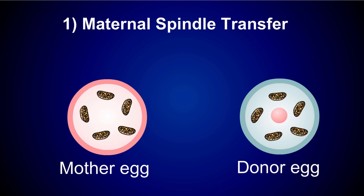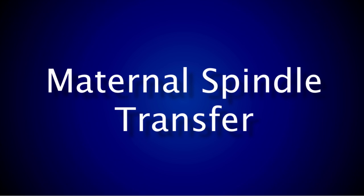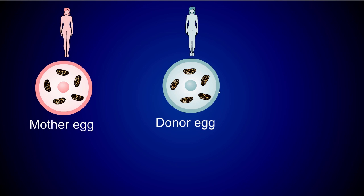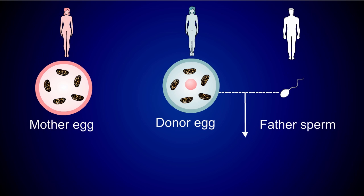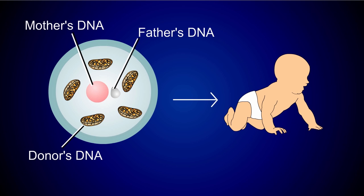One is called a maternal spindle transfer; the other is called a pronuclear transfer. In the maternal spindle transfer procedure, the genetic information from a mitochondrial defect-free donor egg is removed. Then the genetic information from a mother with mitochondrial gene defects is inserted. In this way, a woman with harmful genes in her mitochondrial cells is able to place her genetic information into an egg that is free of the defective genes. This egg is then fertilized by sperm from the father. The resulting embryo contains the father's DNA, the mother's DNA, and a small amount of DNA from the third donor inside the mitochondria of the cell.